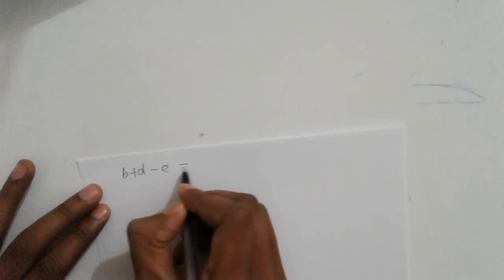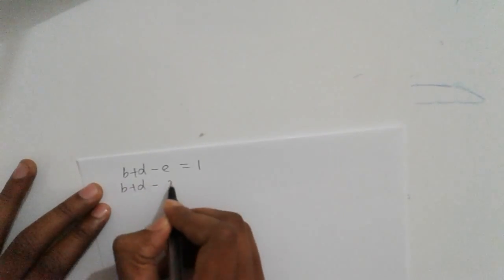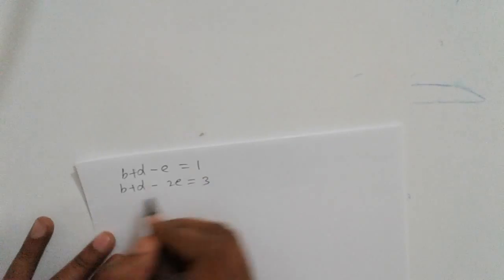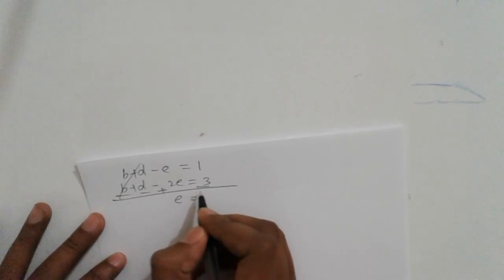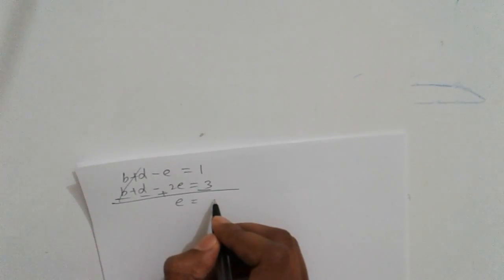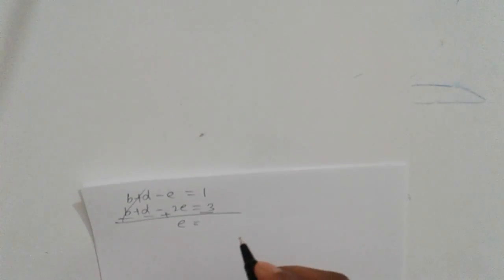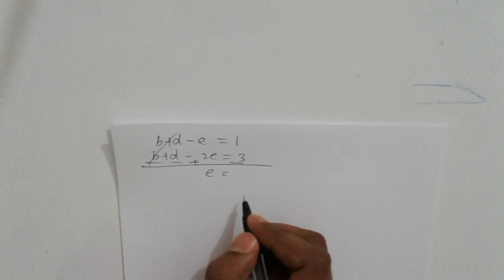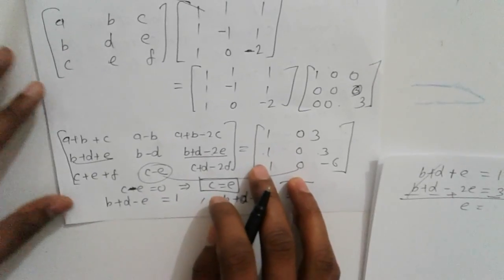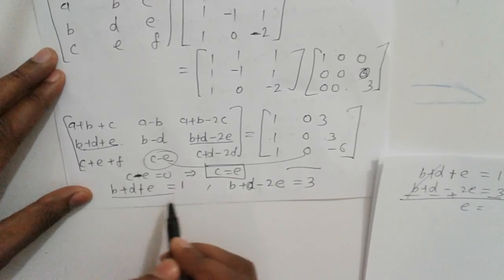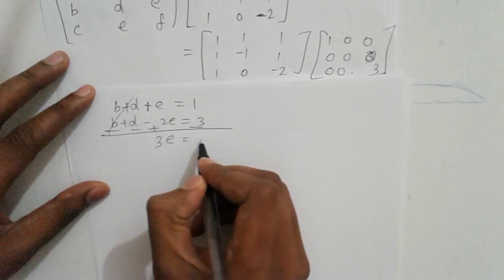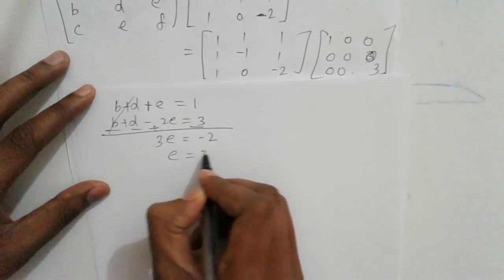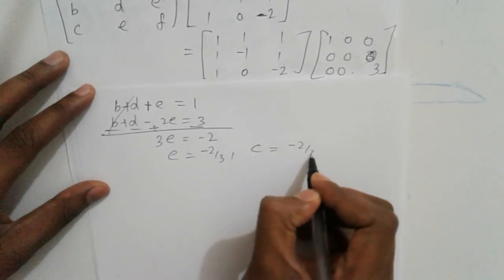That gives us: b + d - c = 1 and b + d - 2e = 3. Subtracting these equations — minus minus plus minus — b + d cancels. So e is equal to: simplifying, we get 3 = -2, meaning e = -2/3. And since c = e, c is also -2/3.